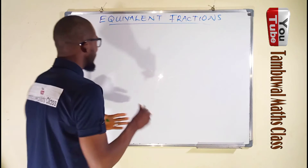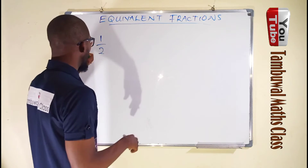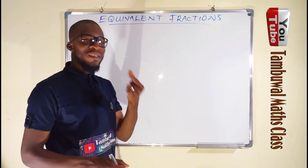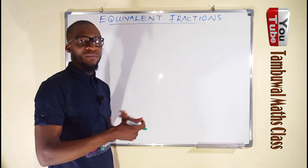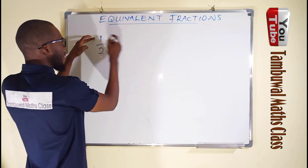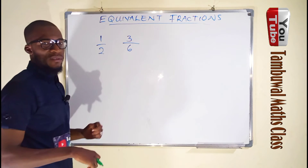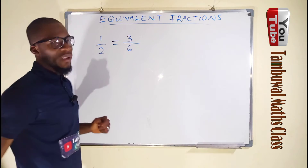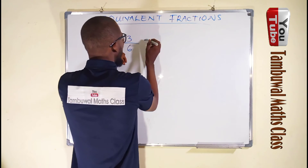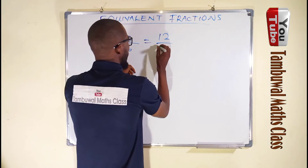Another way to obtain equivalent fractions: if you have one over two and want to find another equivalent fraction, you can multiply the numerator and denominator by the same number. For example, multiply the numerator by 3: one times 3 is 3, and two times 3 is 6. So three over six is equivalent to one over two. You can write an equal sign because they are equal to one another.